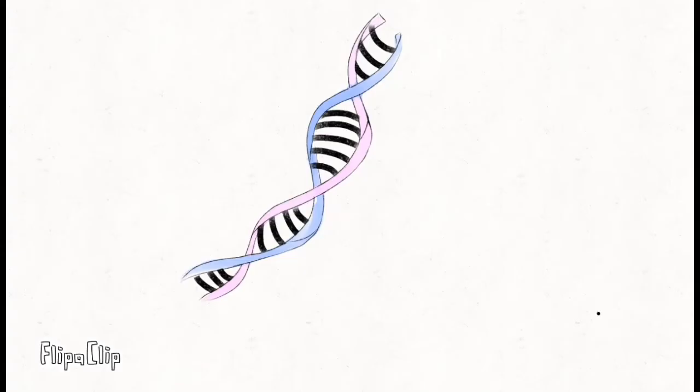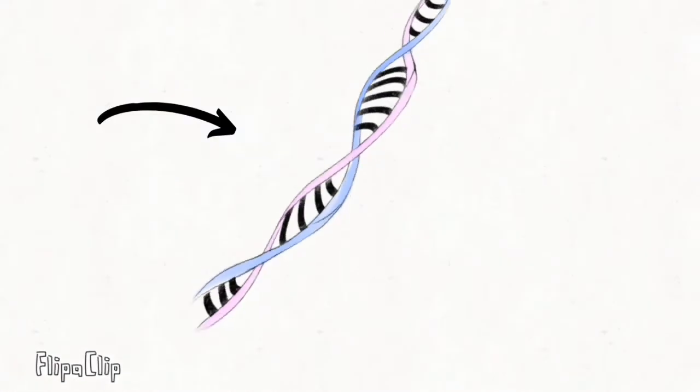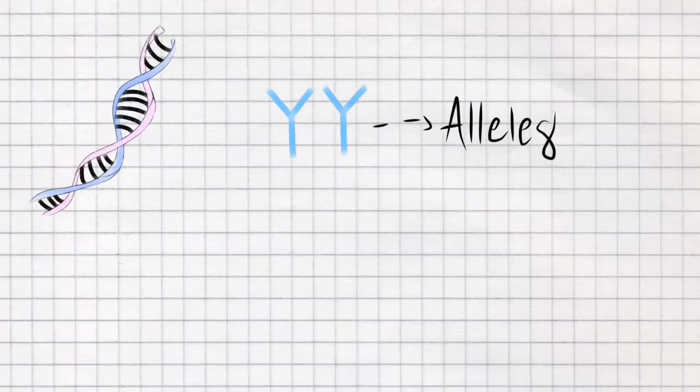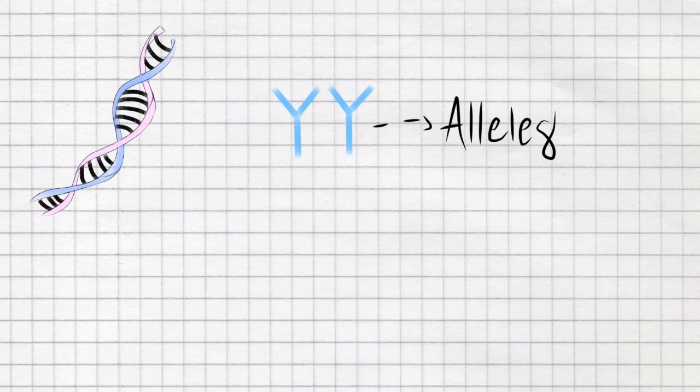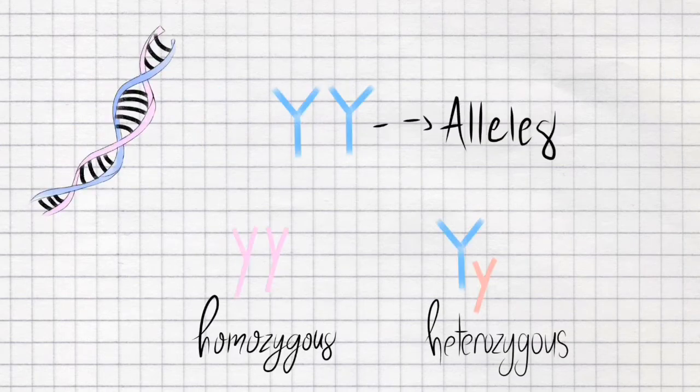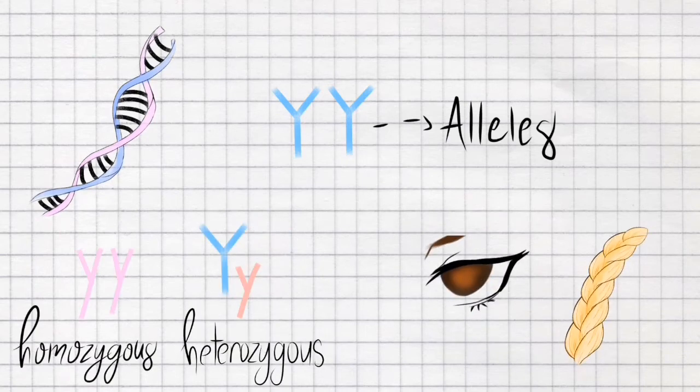Our genetic information is stored in our DNA, and in our DNA we have our genes. Allele is one variant form of gene. It represents one single trait like this brown eye color and blonde hair color.